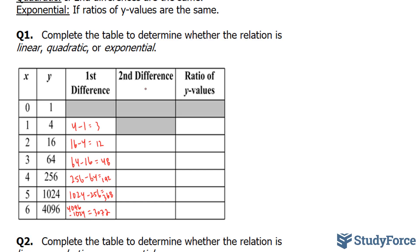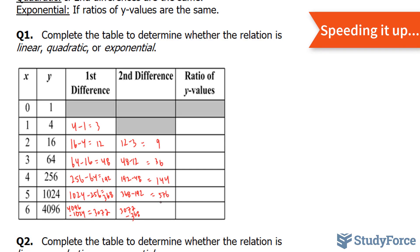Let's try our second differences. And subtracting now 12 minus 3, and so on. 12 minus 3, 48 minus 12, 192 minus 48, 304. Notice that these are not consistent, so therefore it is not quadratic.